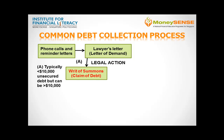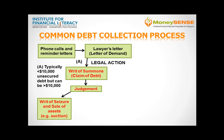If it is not contested, the court will make a judgment against the debtor and assess the sum of money to be paid to the creditor. If the debtor does not comply with the judgment, enforcement can come as either a writ of seizure and sale or a garnishee order.